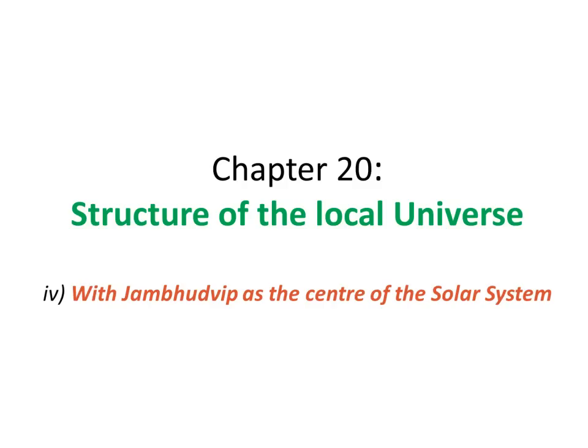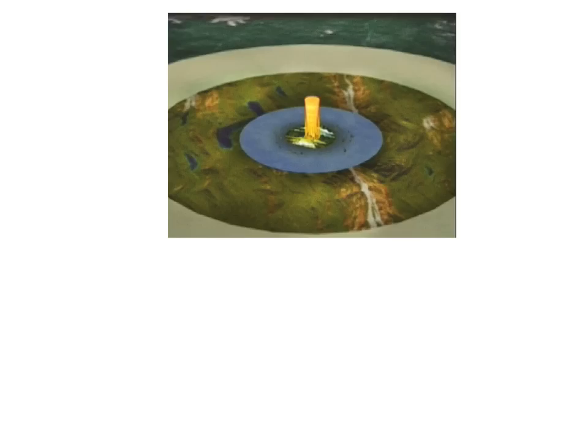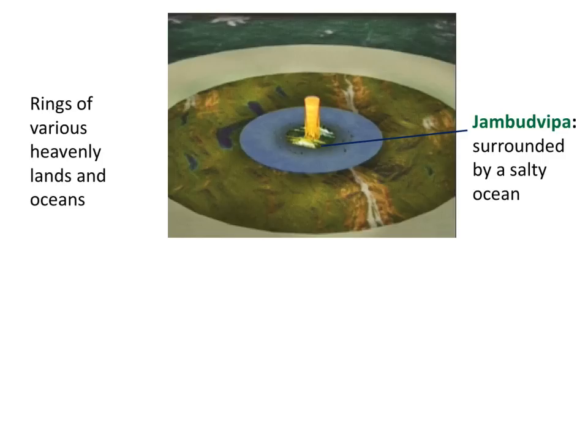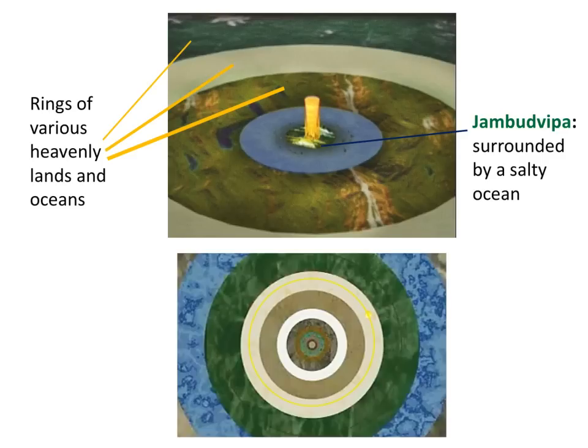That brings us nicely on to Chapter 20, Structure of the Local Universe, with Jambodvip as the centre of the solar system. Because it's not just the island and the surrounding flat plain of salt sea water we find ourselves, but there are other rings too. For example, rings of various heavenly lands and oceans are described. It's called the Plain of Bhumandala. Let's look at the same thing from the top. And here you can see that you get to about the fourth or fifth ring out and we get the orbit of the sun.